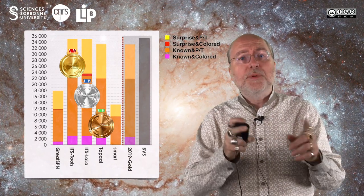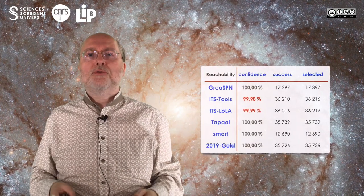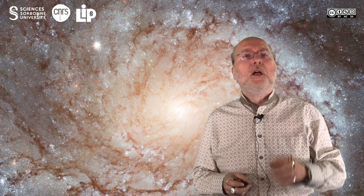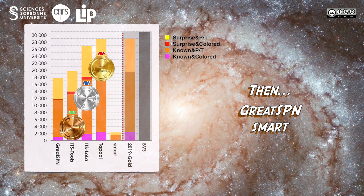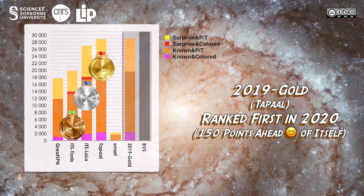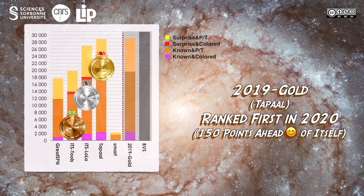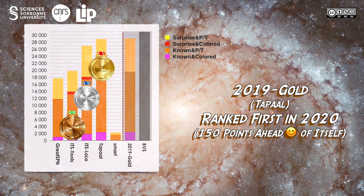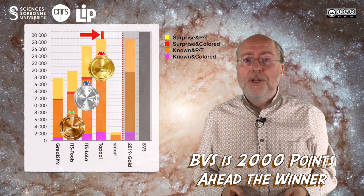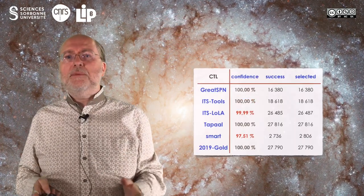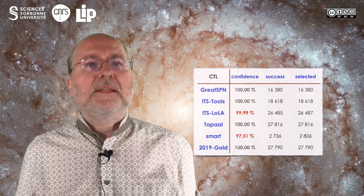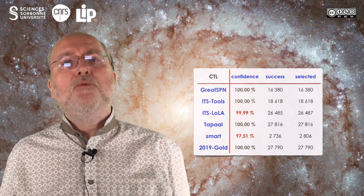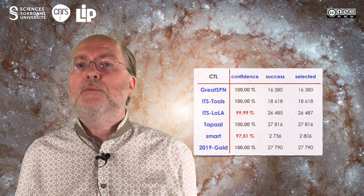Association of techniques can bring a large benefit to tools. For the reachability examination, the confidence rate is quite high, the lowest being at 99.98%. For the CTL family of examinations, five tools did participate. The gold medal goes to TAPAL, then ITS-Lola grabs the silver one, and ITS-Tool gets the bronze medal. They are followed by GreatSPN and SMART. The 2019 gold medal would be ranked first, about 150 points ahead of TAPAL, but last year the gold medal for this examination was TAPAL too and the difference remains very small. SMART joined the CTL examinations this year and we are sure they will use this large test case to solve remaining problems.